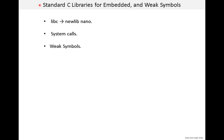This is a short lesson to talk about the standard C libraries for embedded development, and we'll introduce the concept of weak symbols. I'll talk about the libc library and a version of libc called NewLib Nano. I'll also talk about system call functions and how they are handled in our bare metal environment. Finally, I'll introduce the concept of weak symbols and give an example of using weak symbols to implement system calls.